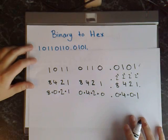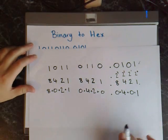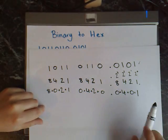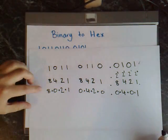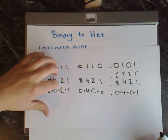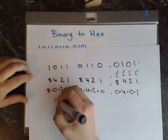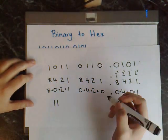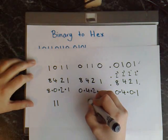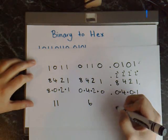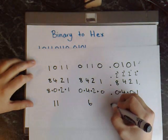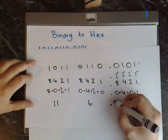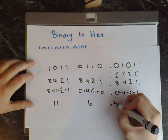Now what we need to do is sum up the digits for each group. So 8 plus 2 plus 1 gives us 11. Then 4 plus 2 gives us 6, keep the decimal point, and 4 plus 1 gives you 5.